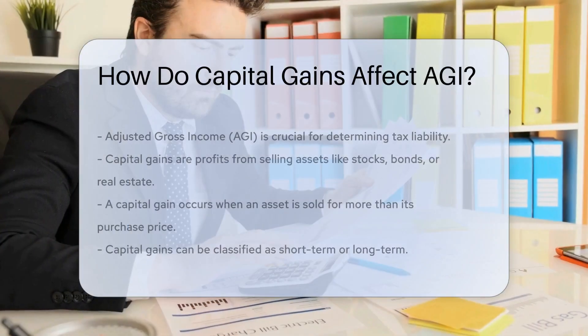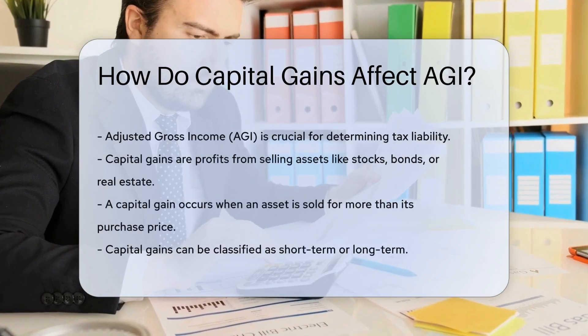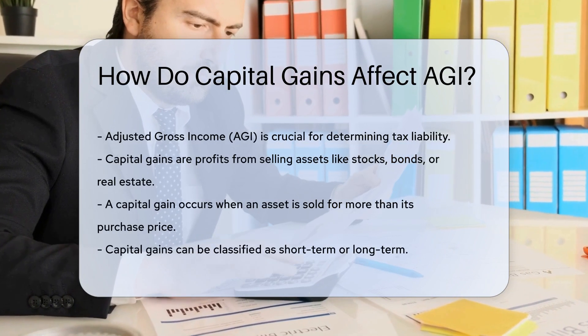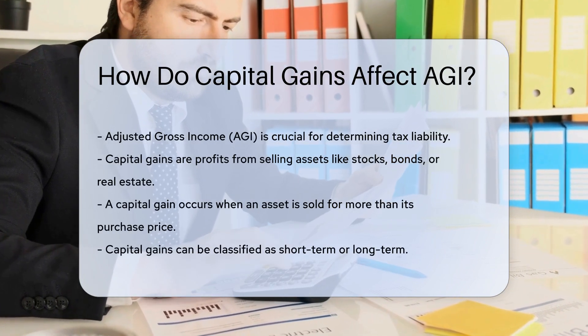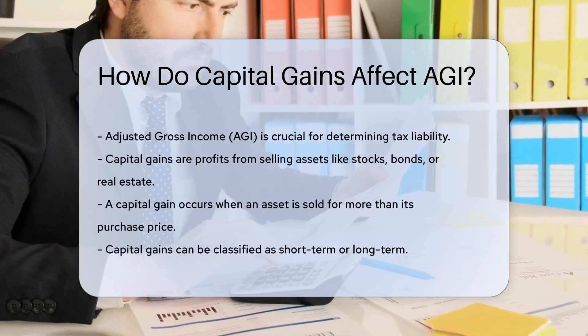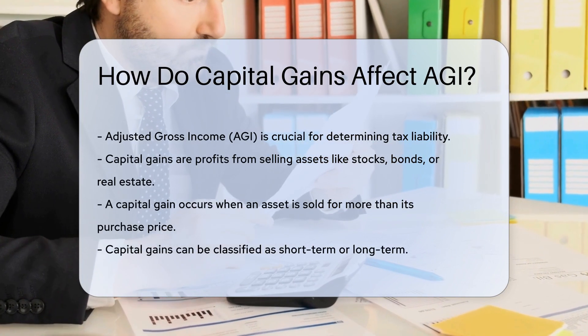An adjusted gross income, or AGI, is a critical figure in determining tax liability. Capital gains are the profits from the sale of assets like stocks, bonds, or real estate.